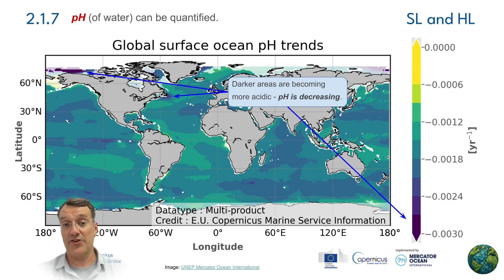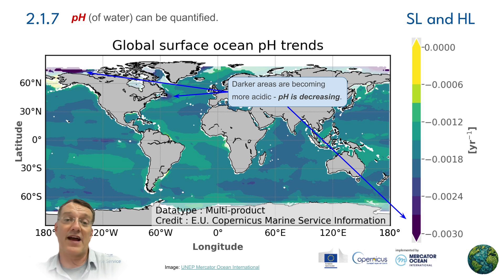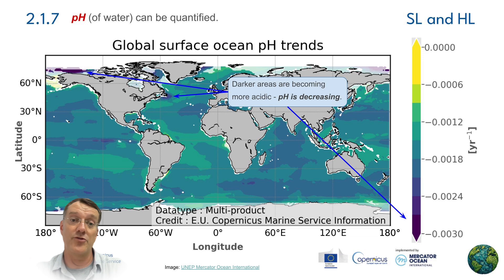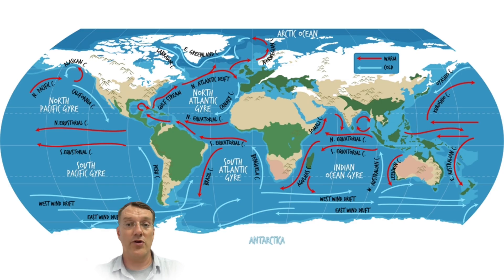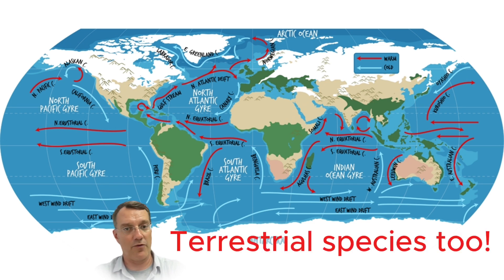Ocean acidification, shown here by pH level, is becoming an increasingly important factor in marine ecosystems as climate change leads to increasing acidification and decreasing pH levels. Salinity patterns influence ocean currents, and that in turn affects the distribution of different marine species around the world.